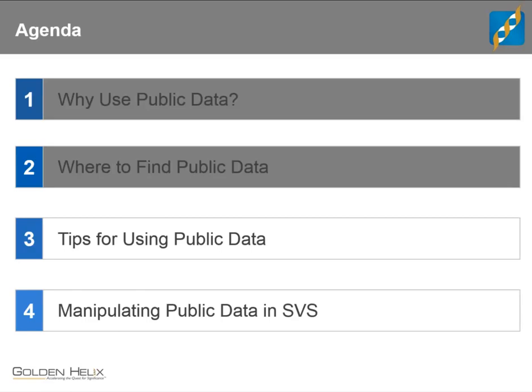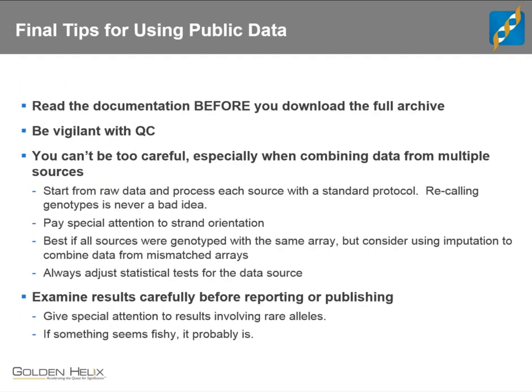A few more tips for using public data: first, read the documentation before you download the full archive. In dbGaP, some GWAS projects — if you get all the raw data like cell files or IDAT files — could easily be half a terabyte or more. Sometimes all you might need is just the processed genotype calls, which could be half a gigabyte or just a few megabytes. So it's good to read through it all before you start downloading and figure out what you really need.